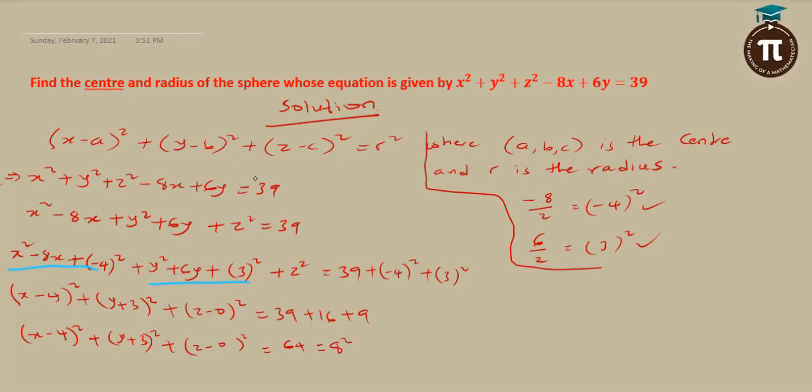Without wasting time, we have gotten what we are looking for. The center of this sphere is equal to 4, minus 3, 0. And the radius is equal to 8.